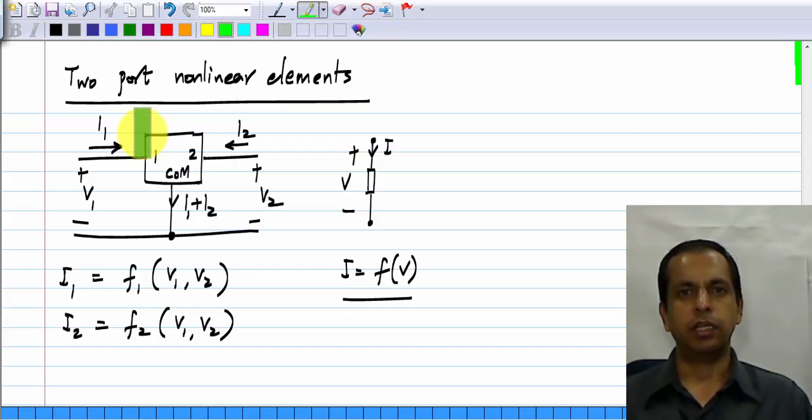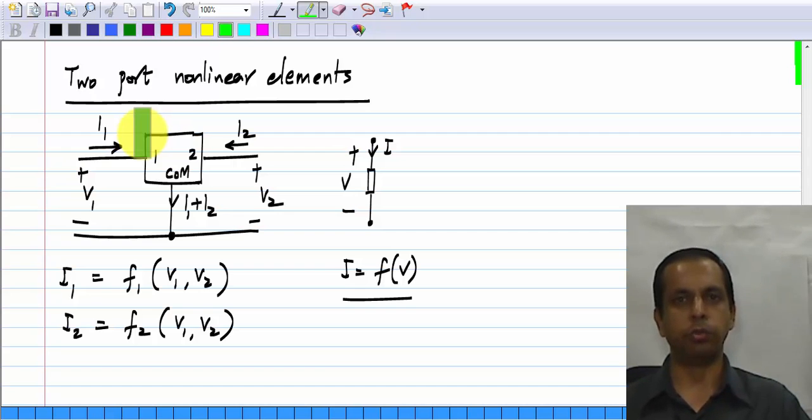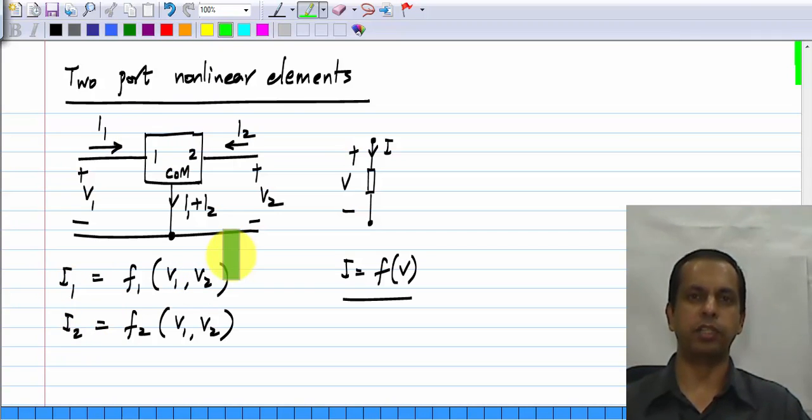You are familiar with linear two ports and all the possible two port parameters which can be used to describe them. Exactly the same thing can be done for nonlinear two ports, the relationships will now be nonlinear, that is all. All the choices of dependent and independent variables you saw earlier can also be used here. We will use currents as functions of voltages because for the devices that we have now, this is the most relevant representation.